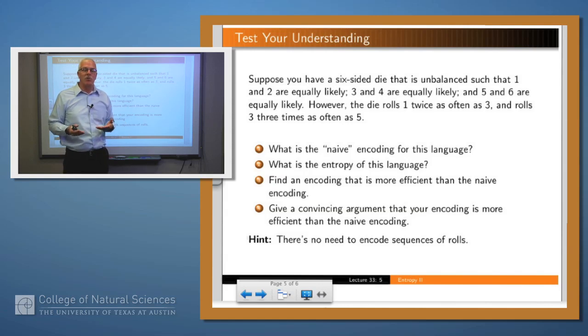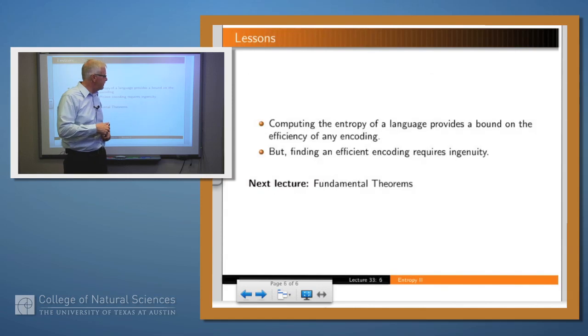What's the entropy of the language? You just plug those probabilities into the formula and crank it out. Could you find an encoding which is more efficient than the naive encoding? Hopefully you could. And finally, give an argument that the encoding you came up with is more efficient than the naive encoding - that is, uses fewer on average than three bits per symbol. Hopefully you can figure this out. But here's a hint: there isn't any need in this case to encode sequences of rolls. You can do it with just encoding one roll at a time.